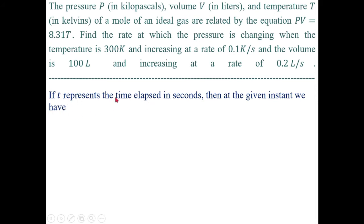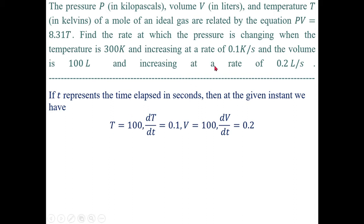Here, if t represents time elapsed in seconds, then at the given instant: V = 100 liters, T = 300 Kelvin, dT/dt = 0.1 Kelvin per second, and dV/dt = 0.2 liters per second.